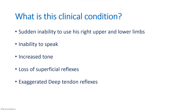What is the clinical condition? The patient has sudden inability to use his right upper limb and lower limb, which means he has right hemiplegia, because one half of his body is completely paralyzed. That is why we say it is hemiplegia.